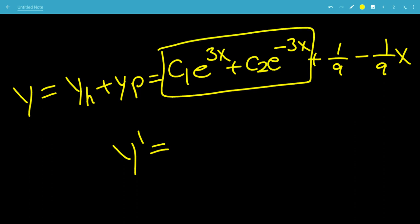So, you don't need to include c1 in the final solution. This would be c1 times 3 times e to the 3x, but let's just make another constant, so that would be k1 e to the 3x, plus k2 e to the minus 3x.